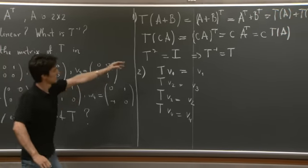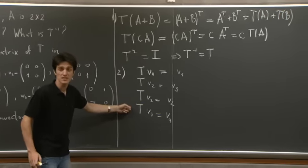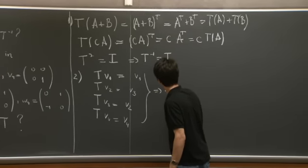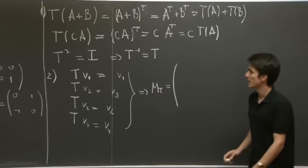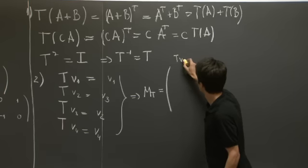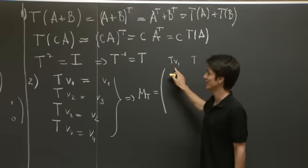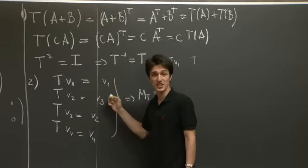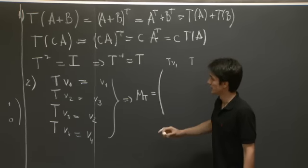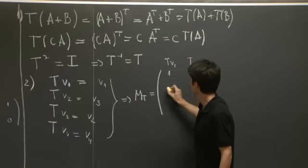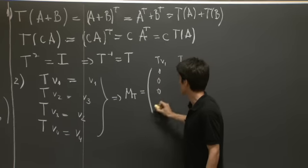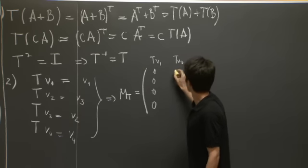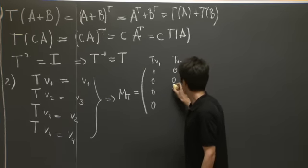So now we encode this into a matrix in the following way. Essentially, the first column will tell us how T of V1 is expressed as a linear combination of the basis elements. Well, in this case, it's just V1. So it's going to be 1 times V1 plus 0 V2 plus 0 V3 plus 0 V4. T of V2 is V3. So we have 0, 0, 1, 0.